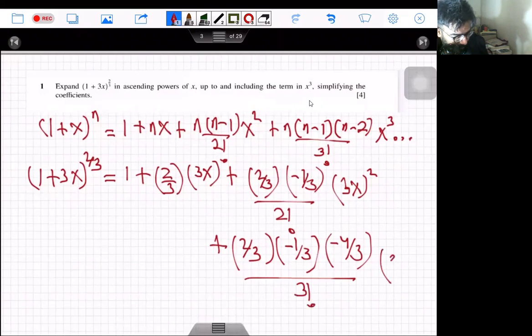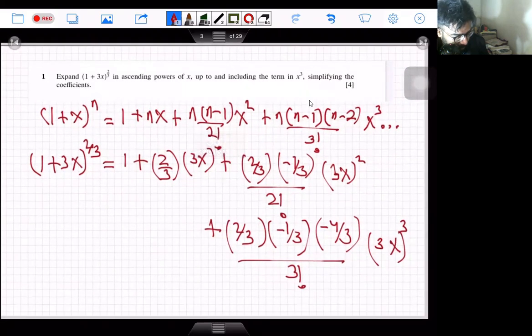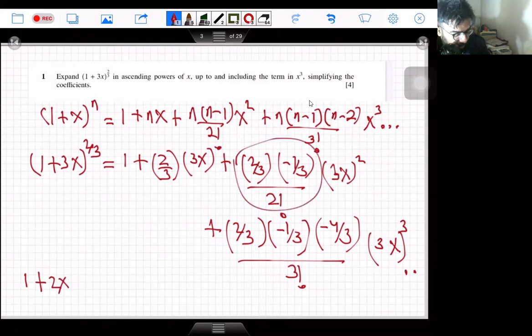So 1 plus this 3 and this 3 is cancelled out, so 1 + 2x. And then put this whole thing in your calculator: 2/3 multiplied by -1/3 divided by 2 factorial multiply by 3², so this is -x².